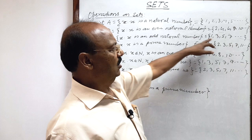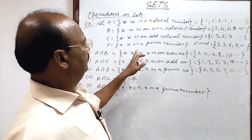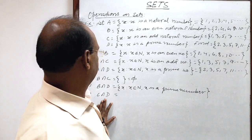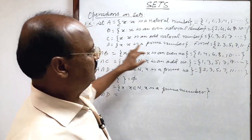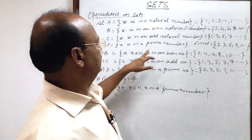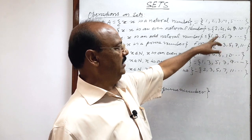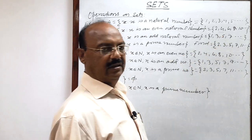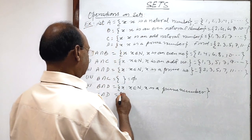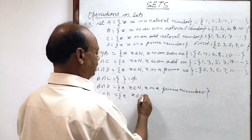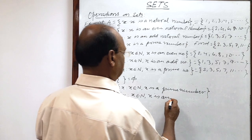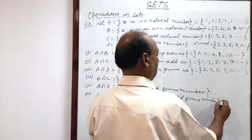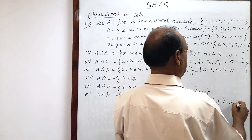C∩D: C is the set consisting of all odd natural numbers and D is the set consisting of prime numbers. The elements common in these two sets will be odd prime numbers like 3, 5, 7, 11 and so on. So C∩D = {x such that x belongs to the set of natural numbers and x is an odd prime number}, i.e., 3, 5, 7 and so on.